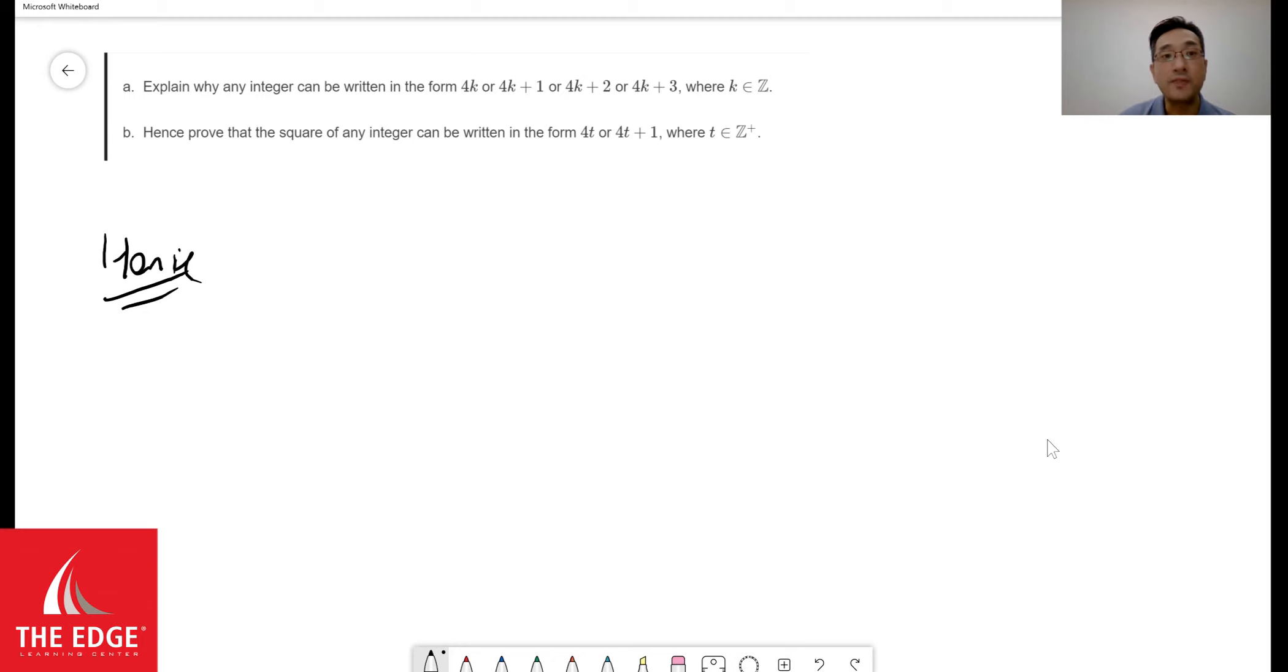Right now, in this case, we're asked to prove that the square of any integers can be written in the form of 4t or 4t plus 1. Now, there's again the t, any integers. And the word hence tells us that we must be looking at the previous part to continue with this proof.